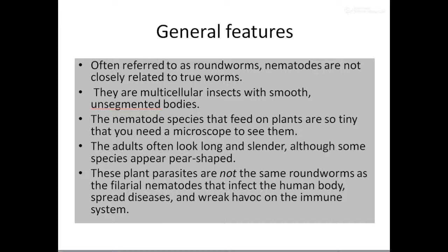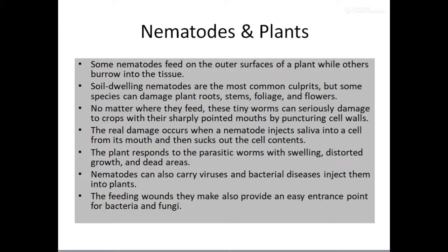Some nematodes feed on the outer surface of the plant while others burrow into the tissue. Soil-dwelling nematodes are the most common culprits and can cause damage to plant roots, stems, foliage, and flowers. No matter where they feed, these tiny worms can seriously damage crops with their sharply pointed mouths puncturing cell walls. The real damage occurs when a nematode injects its saliva into the cell and then sucks out the cell contents.